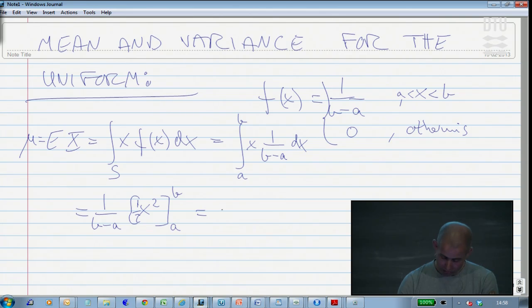So we just plug in 1 over b minus a, 1 half times b to the square minus a to the square.